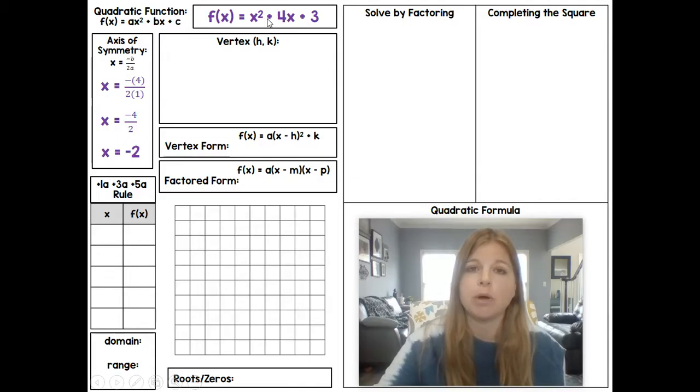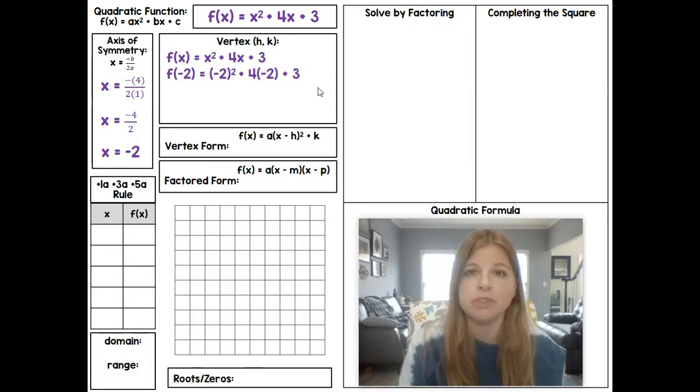And that x and y value are then going to be the h and k, which is the vertex of the function. So if I go ahead and I take this function out, f(x) = x² + 4x + 3, I go ahead and I substitute a -2 in for everywhere I see x. So it would look like this: f(-2) = (-2)² + 4(-2) + 3. And then we evaluate.